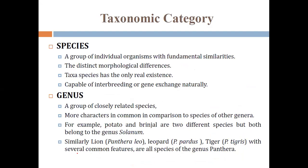Quick question: In 'Panthera leo' (scientific name of lion) — A is Panthera and B is leo. Which is genus and which is species? A (Panthera) is genus, B (leo) is species. This is an easy and scoring chapter — all-India selections answer these questions.